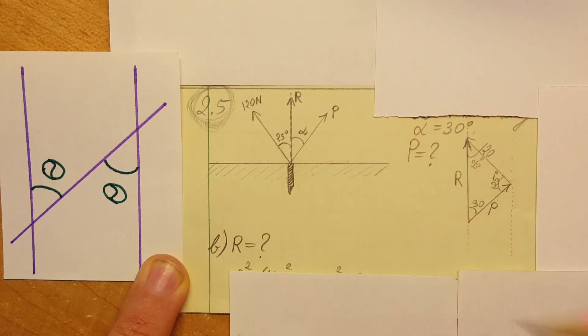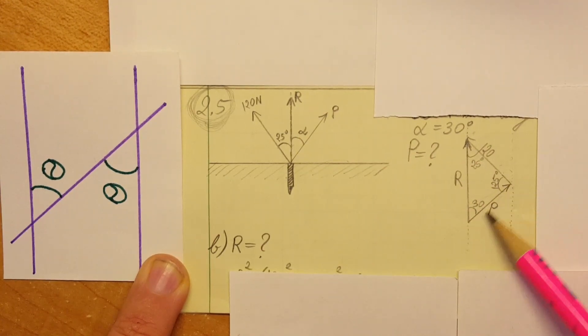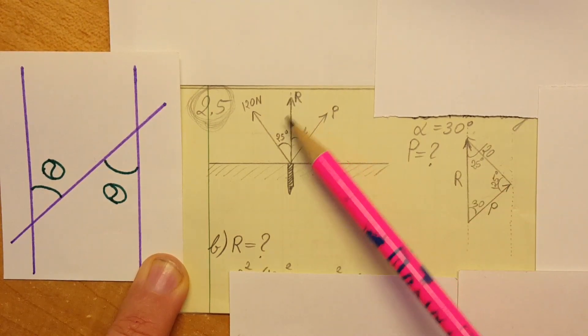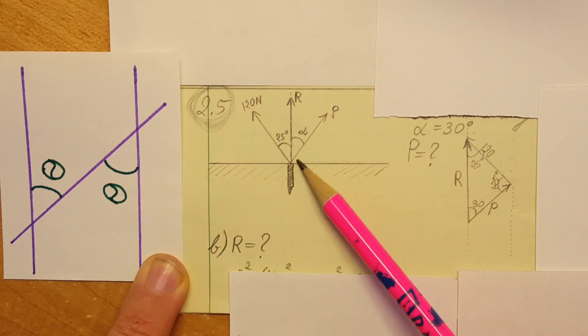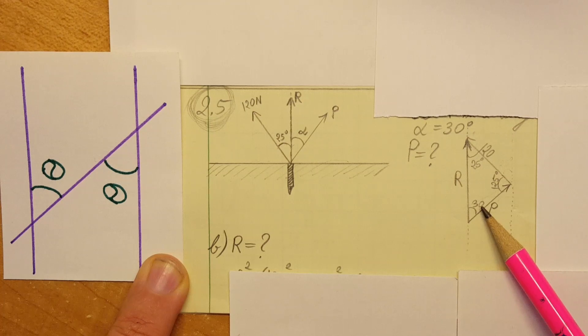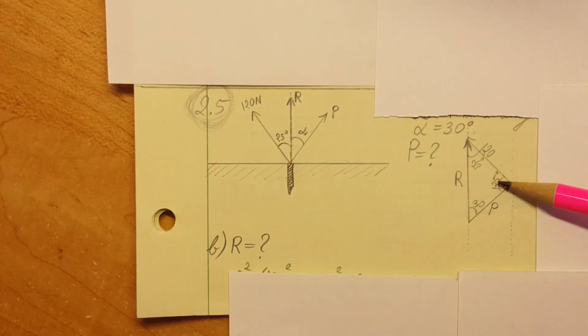All right, now same here we're going to work on the vector P. We see that P is next to a vertical line. This is vertical and P is right here at 30 degrees, so therefore this is 30 degrees as well.